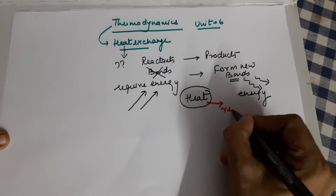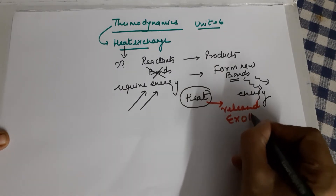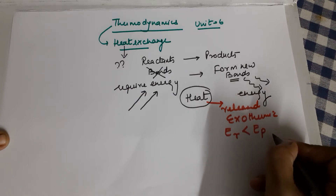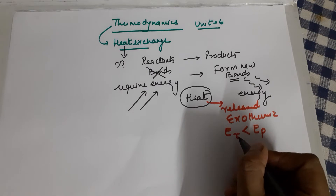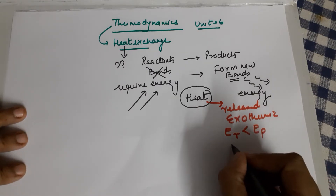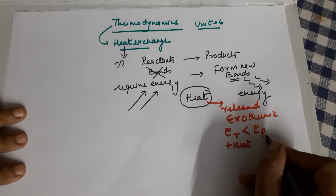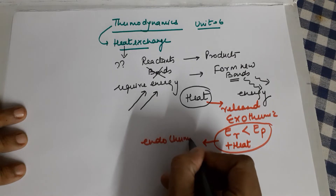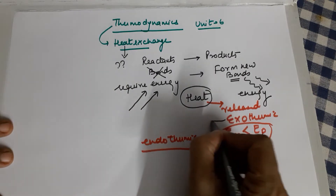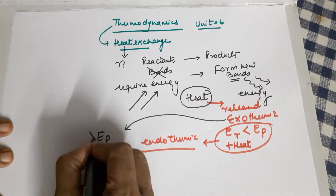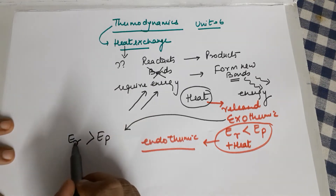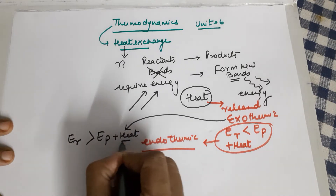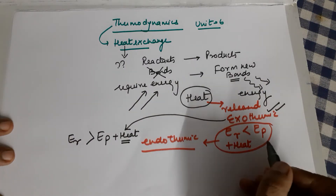If the net energy is released, we say the process is exothermic, which means energy of the reactants is more than the energy of the products. But if the energy of the reactants is less than the energy of the products, energy will be required — you will have to give heat to lead to the formation of products. This is the endothermic process. For the exothermic process, energy of the products is less than the energy of the reactants, so when reactants change to products, heat is released.